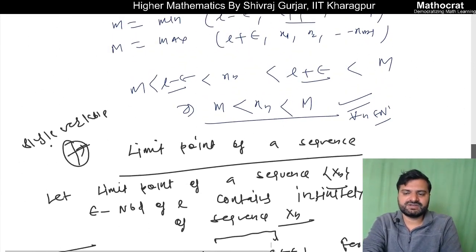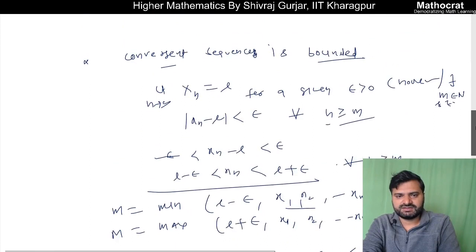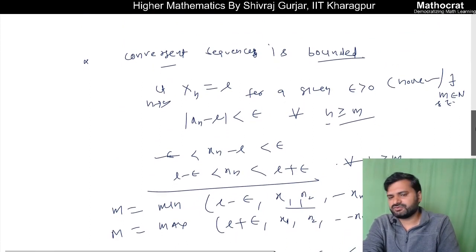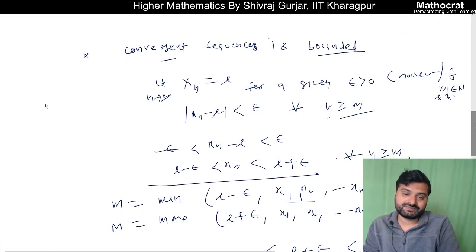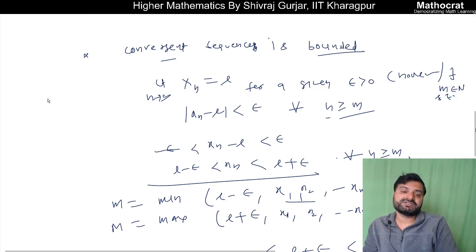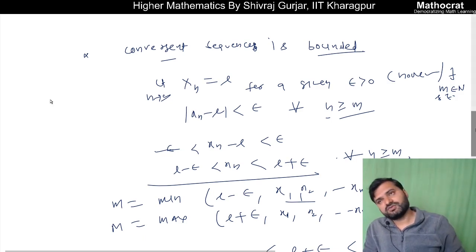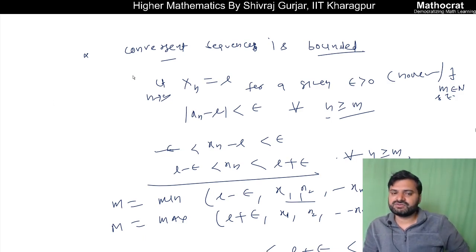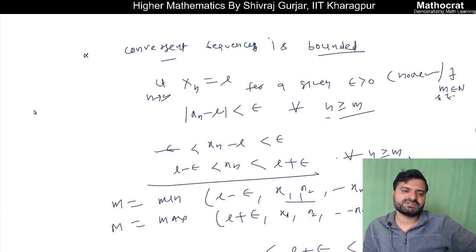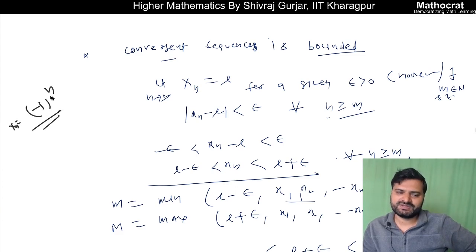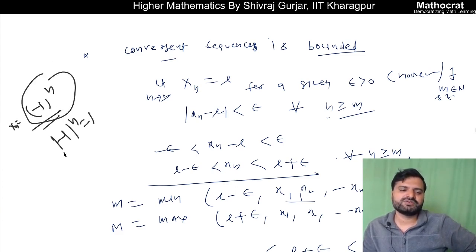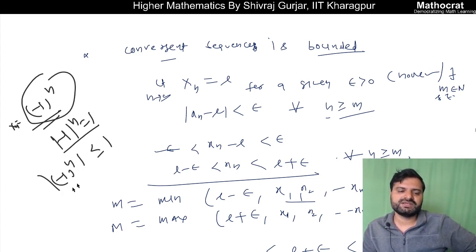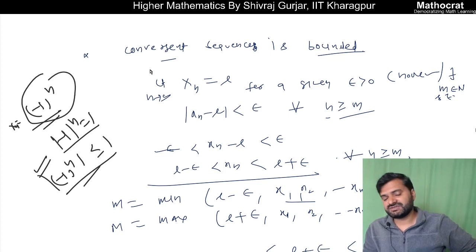The bounded condition we discussed is necessary only — it is not sufficient. Even a divergent sequence or an oscillatory sequence — a sequence which is not convergent — can be bounded. For example, consider the sequence xn = (-1)^n. This is a very good sequence to discuss as a counterexample. It is bounded, but it is not convergent.